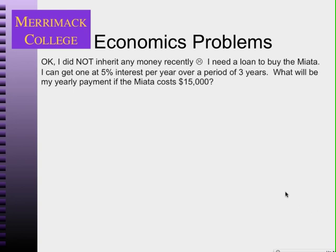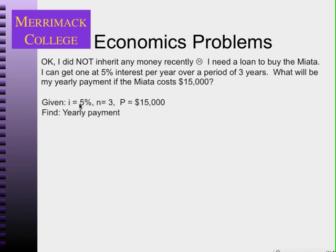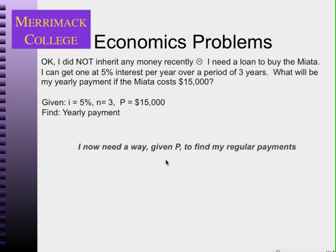What if I did not inherit any money but need a loan to buy the Miata? I can get a 5% interest loan over a three-year period. What will be my yearly payment if the Miata costs $15,000? Given the interest rate, the number of periods, and the present value of $15,000, I want to find a yearly payment A. I now need a way to convert P into regular equal payments.